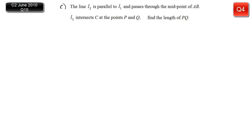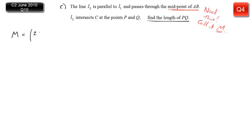Part c at first glance is tricky. We want a line that passes through the midpoint of AB, is parallel to L1, then intersects the circle at two points P and Q — and we need the distance between them. We'll need the equation of the line, so we need the midpoint M of AB first. M is the mean of the x-coordinates and y-coordinates of A and B: (2+10)/2 and (1+7)/2, giving us the midpoint.